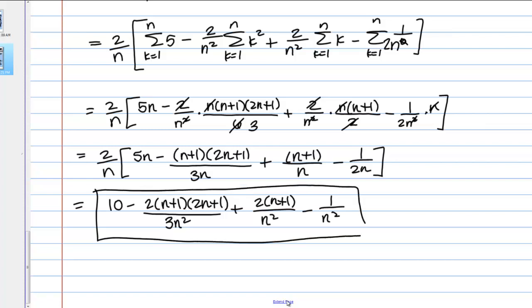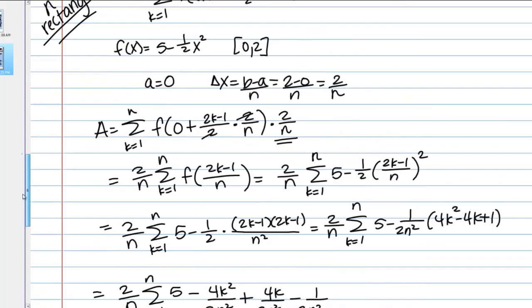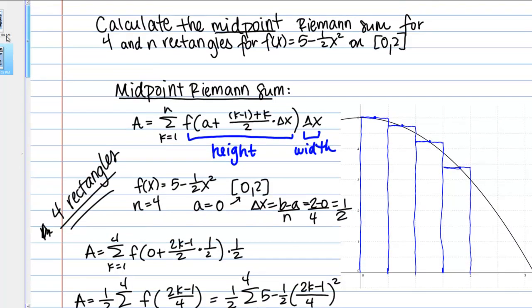This gives us an expression for the midpoint area approximation for any N that we may choose. Right, so if I plugged in N equals 4, I would get the same answer as I did up above. Or I could plug in any N, right, the bigger the N I plug in, the better my approximation. Alright, so remember that there's also videos for left and right endpoints, if you want to watch those, you can watch those as well.